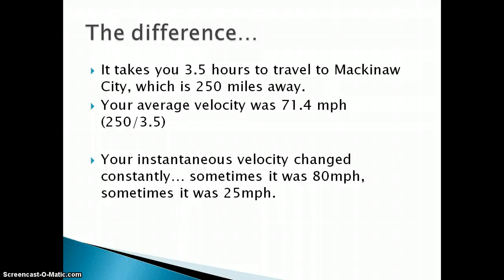So here's a quick example to tell you the difference. Let's say you're traveling to Mackinac City. It's 250 miles away. Your average velocity was 71.4 miles per hour, 250 miles in 3.5 hours. Your instantaneous velocity changed constantly. Sometimes it was 70, sometimes you went above the speed limit and it was 80, sometimes you had to slow down as you were traveling through a small town and it was 25, sometimes it was zero because you stopped to fill up for gas.